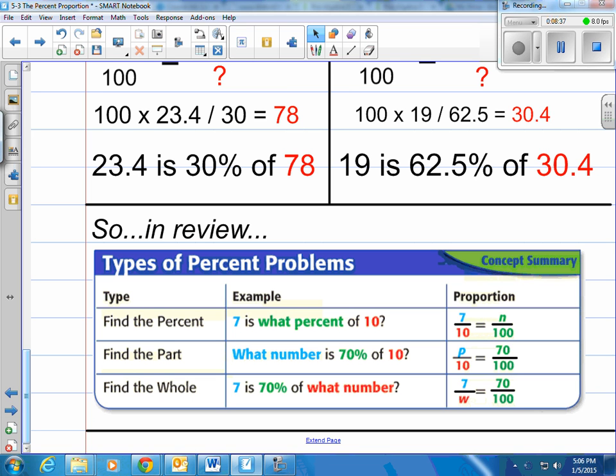All right. In simple review here, there's only three things they can ask you. So if you look, the types of percent problems you're gonna have, you're either finding the percent, finding the part, or finding the whole. And examples of what they look like are given there. So if you're looking for the percent, it's typically gonna say something like this: seven is what percent of 10. Or if it's the part, they say what number is 70% of 10. And if it's the whole, it typically looks like seven is 70% of what number. And you can see how they set up those proportions using that simple formula that they had there.